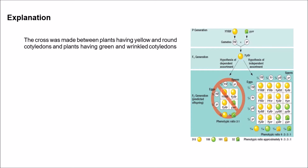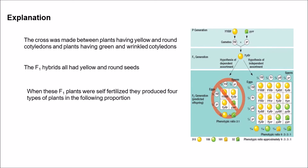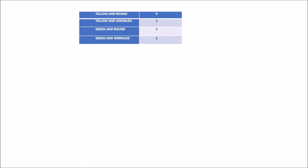The cross was made between plants having yellow and round cotyledons and plants having green and wrinkled cotyledons. The F1 hybrids all had yellow and round seeds — even though yellow and round was crossed with green and wrinkled, they exhibited the dominant yellow and round seeds. When these F1 plants were self-fertilized, they produced four types of plants in the following proportion: